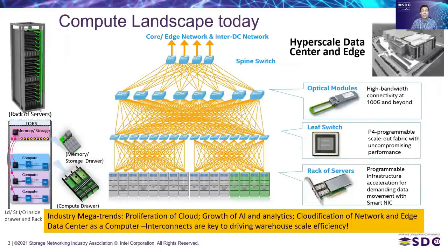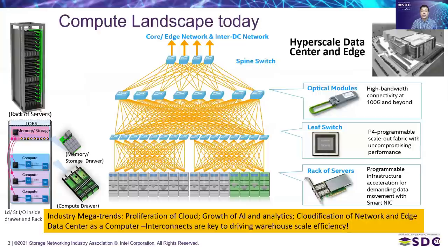The picture here shows the interconnects at different levels of the data center, looking from outside in. Other segments such as edge computing and on-premise computing are using cloud infrastructure concepts. A data center comprises racks of servers connected through network fabrics with optical connections for longer distances and copper for short distances. Each rack consists of multiple chassis or servers, and each drawer can be a compute drawer, a memory drawer, or a storage drawer.